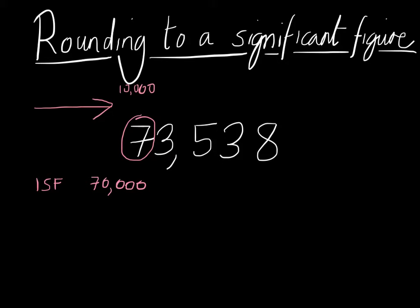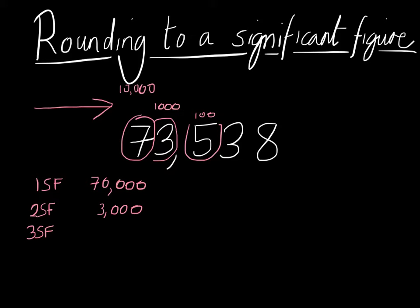The second significant figure is the second number we see as we go along — that's the 3, and it's in the thousands column. So the second significant figure represents 3,000. The third significant figure is the next number we see, which is in the hundreds column, and there are 500, so it represents 500.